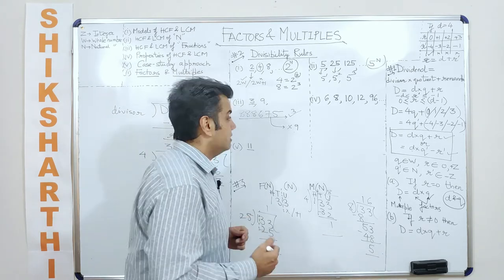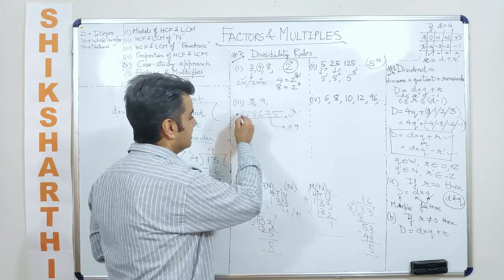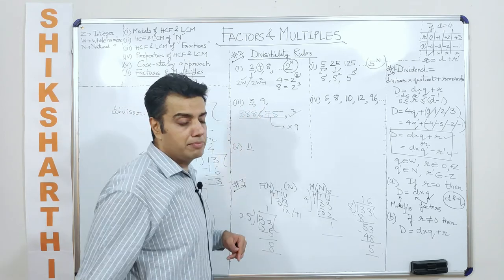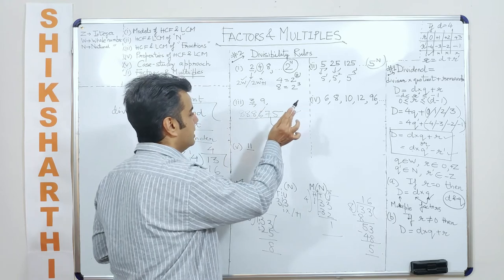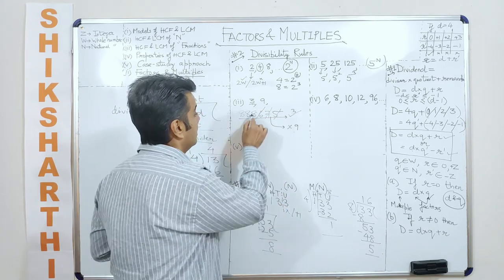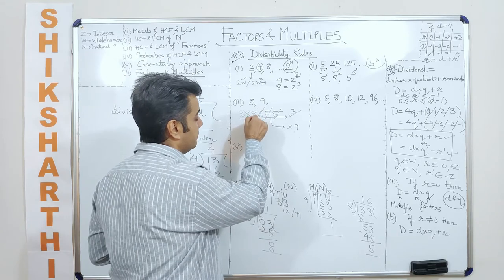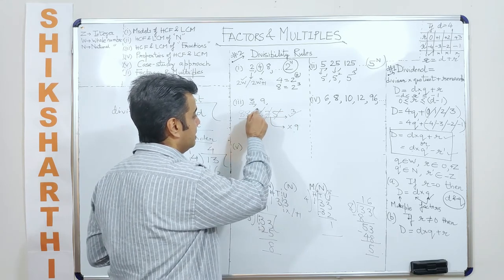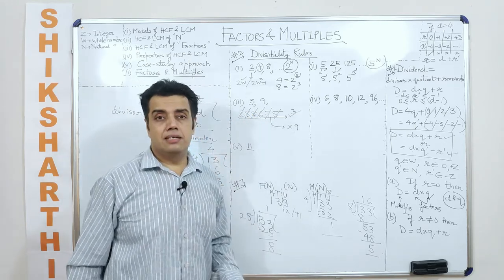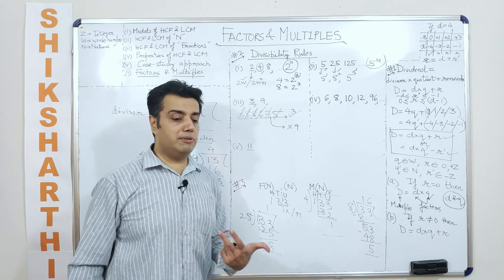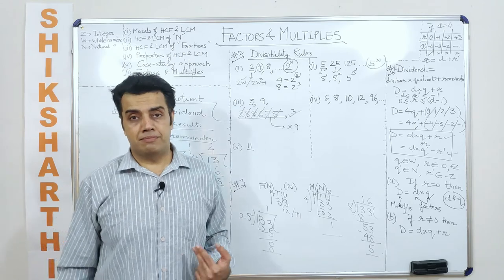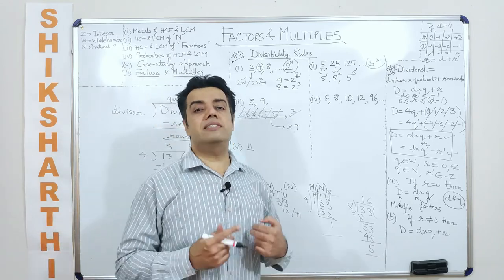To cut short the process for divisibility by 3: strike out all digits or groups whose sum is a multiple of 3. For example, 6 is a multiple of 3 — strike it. 7 + 5 = 12, a multiple of 3 — strike it. The remaining digit 8 gives remainder 2 when divided by 3. Adding the remainders: 2 + 2 + 2 = 6, so the number is divisible by 6. This saves time.